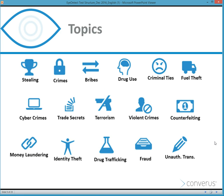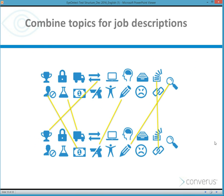Topics for iDetect tests can be single issue — stealing, for example — or they can be multiple issues, combining any one of these target behaviors of interest. You could ask about drug use, crimes, and counterfeiting. Combining test topics is easy — we simply pick the topics to be combined, craft a test around those topics, and choose an R2 issue as well. iDetect is used around the world.